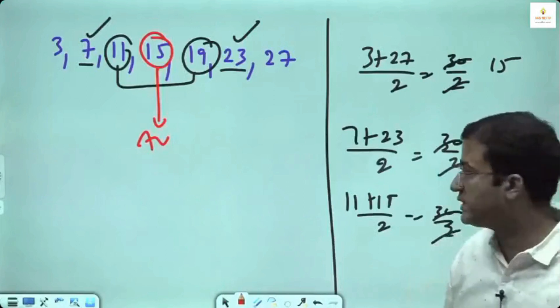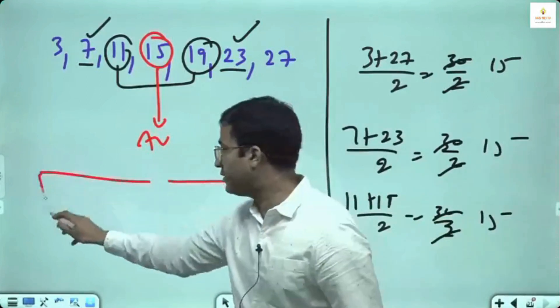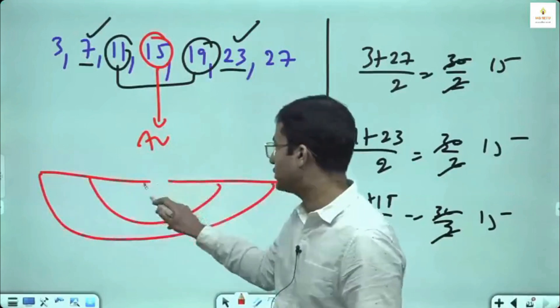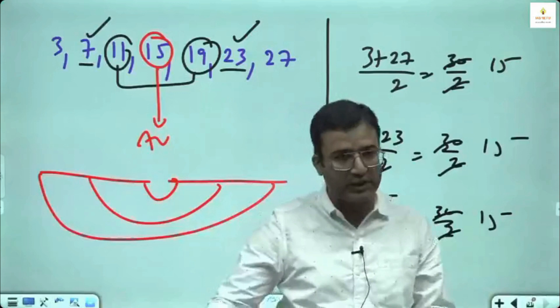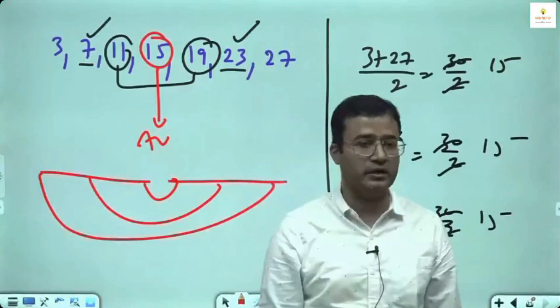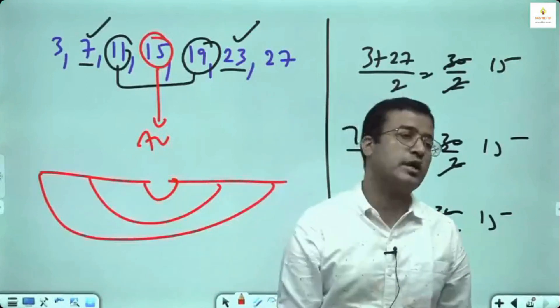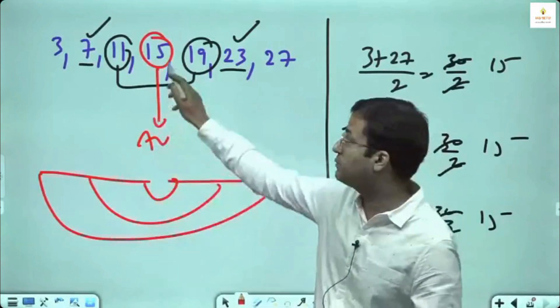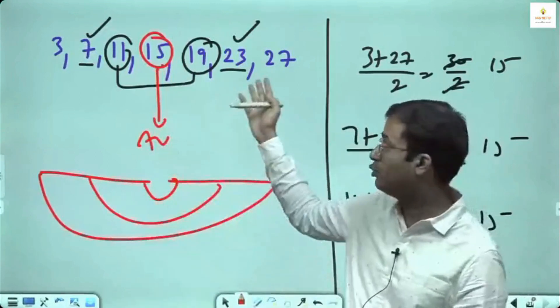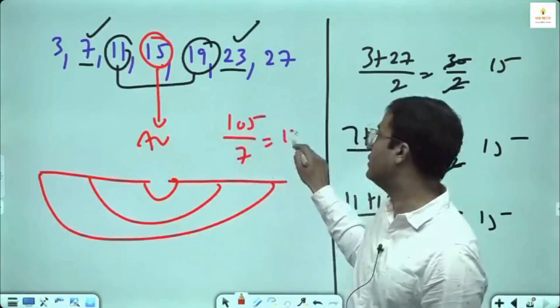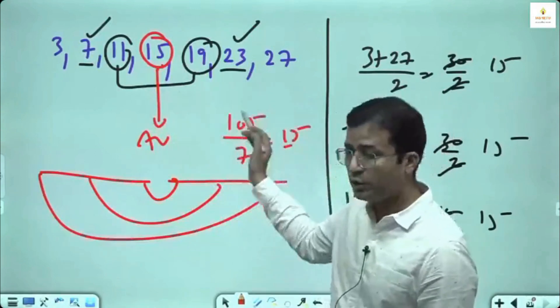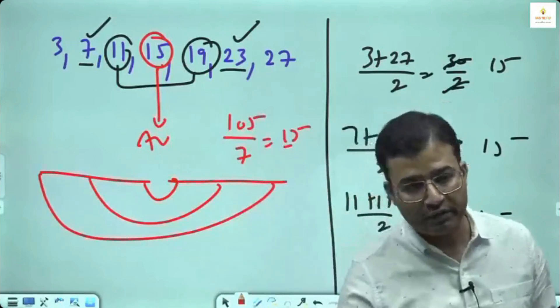If there are 6 terms, you get 3 pairs. But if there are 7 terms, there will be 3 pairs and 1 term in middle. That middle term is also the average. This middle term itself is average. If you take total, it's 105 divided by 7, so your average is 15. But no need to take total because we have a shortcut: first term plus last term divided by 2 gives you average.